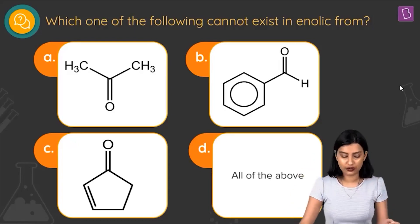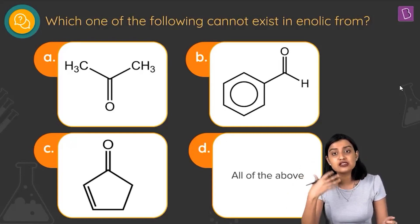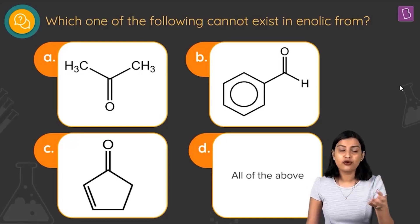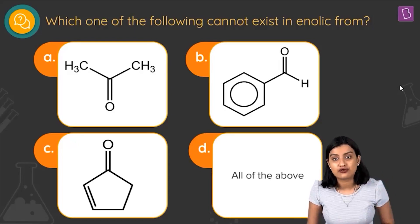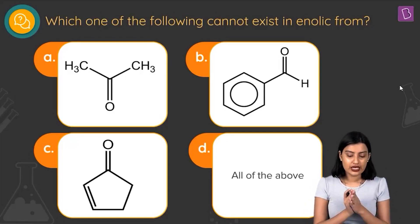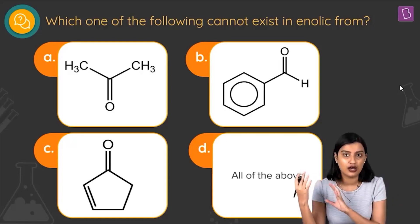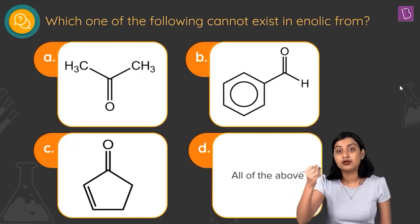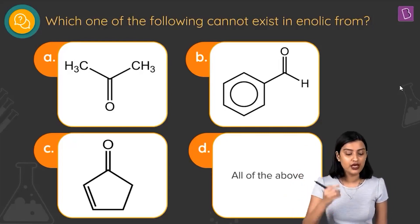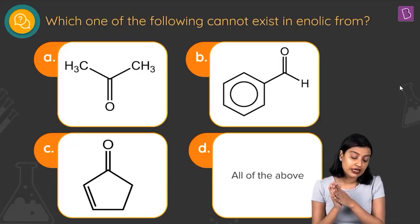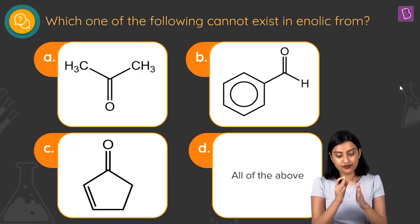For a molecule to show an enol form, it must have an alpha hydrogen — a hydrogen on the carbon adjacent to the carbonyl group (sp3 hybridized alpha carbon). Option A satisfies this: adjacent to the carbonyl carbon there is a carbon bearing a hydrogen, so option A has an alpha hydrogen and can form an enol.